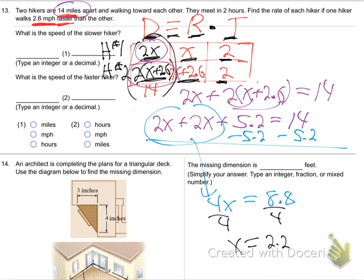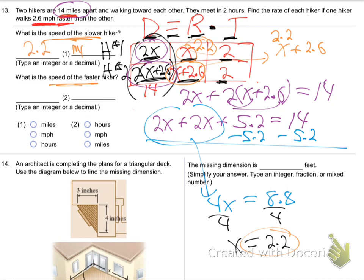X equals 2.2 is the key. The slower hiker's speed is X equals 2.2 miles per hour. The faster hiker is X plus 2.6 equals 2.2 plus 2.6 equals 4.8 miles per hour.